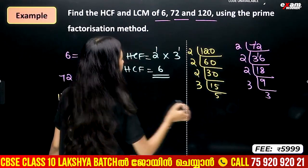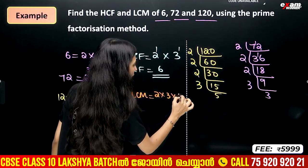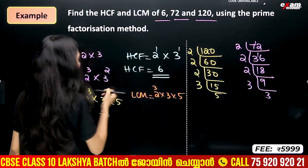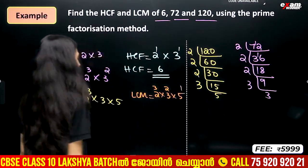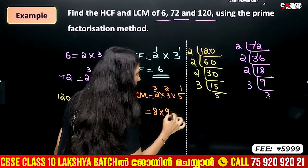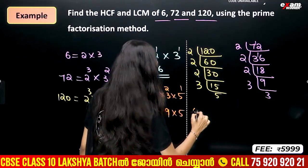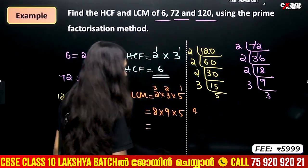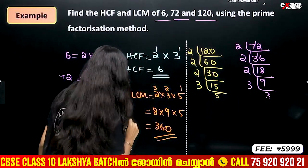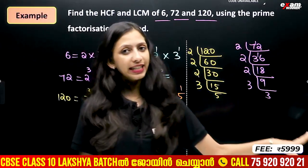For LCM, we take all prime factors at their greatest powers: 2 cubed, 3 squared, and 5. That gives us 8 into 9 into 5 equals 360. LCM is 360 and HCF is 6.